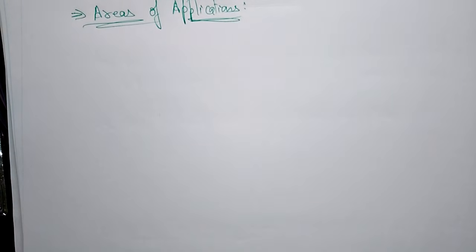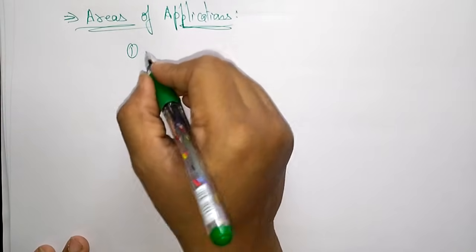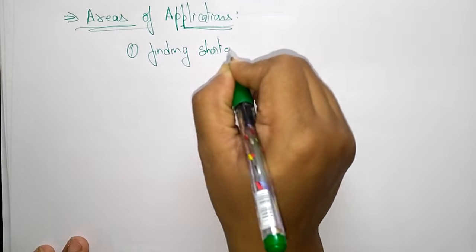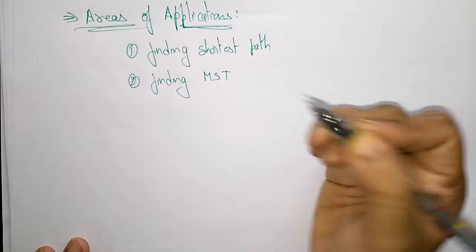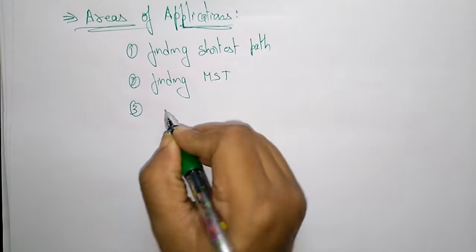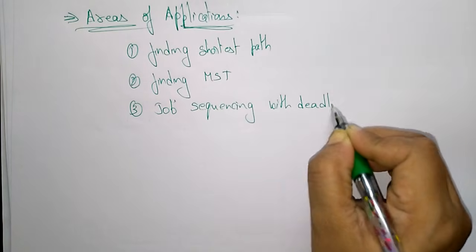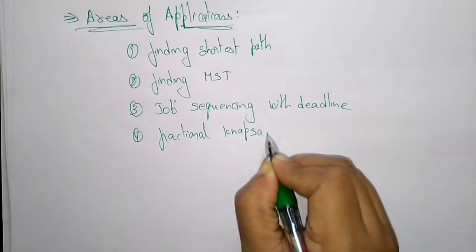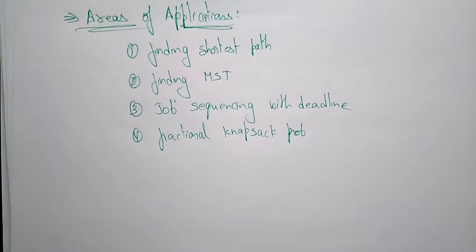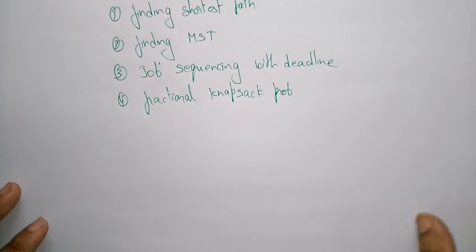The greedy method is used to solve many types of problems. The main areas of application include: finding the shortest path, finding the minimum spanning tree using Prim's algorithm or Kruskal's algorithm, job sequencing with deadlines, and fractional knapsack problems. In this topic we will discuss each application clearly after explaining the pseudo code.